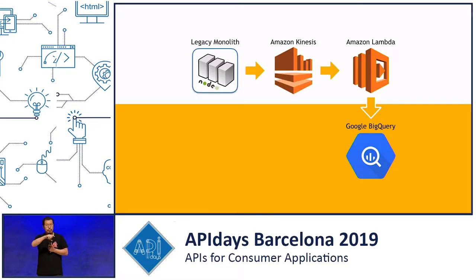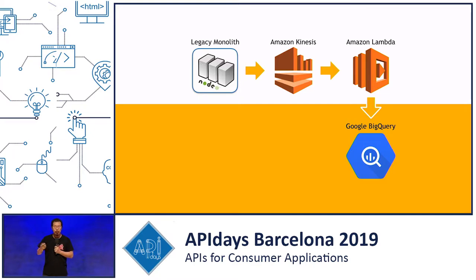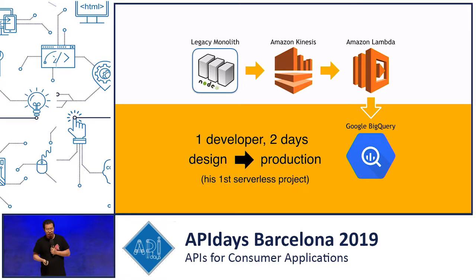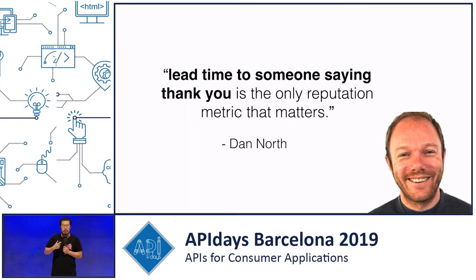So we went about streaming all the events we already had in the Kinesis stream to Google BigQuery — a GCP service for doing ad hoc queries against exabyte-scale data sets and getting answers back within a few seconds. Our BI analyst could write plain SQL-like queries against BigQuery and find all kinds of interesting answers about what users were doing in our platform. The first iteration took one developer just two days from initial discussion to running something in production. Our BI analyst — who had just joined us recently — afterwards came to us and said, 'Jesus guys, nothing ever got done this fast at Skype,' which of course goes back to the point about lead time being the most important thing.